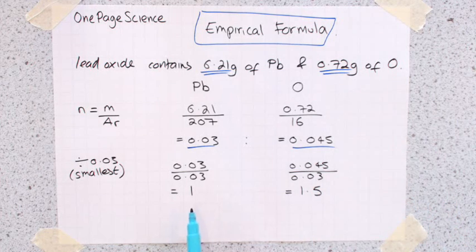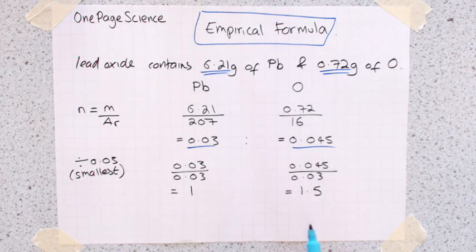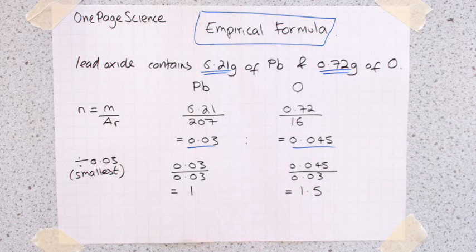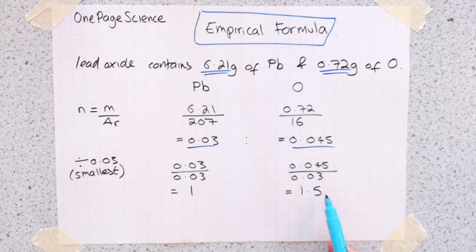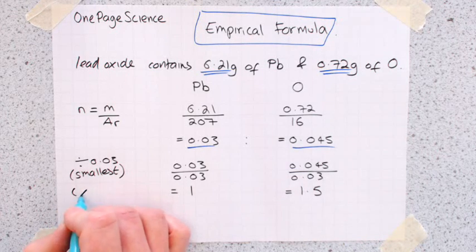So what we've got now then is a ratio of 1 to 1.5. To get this to be an empirical formula, we've got to make this a whole number ratio. So we've got 1.5 here, so if we double both sides, so if we times both sides by 2, so this is what we're doing, times them by 2.